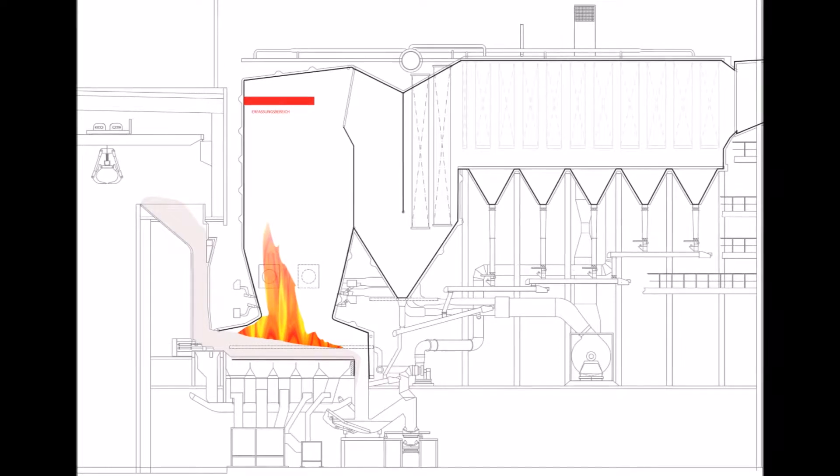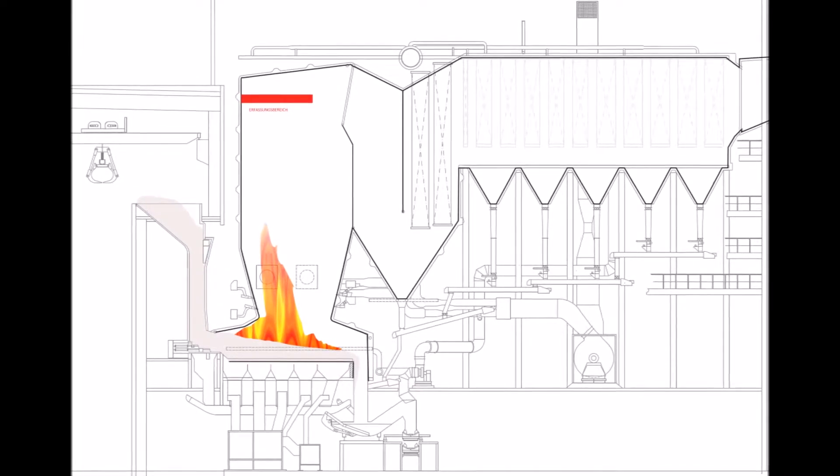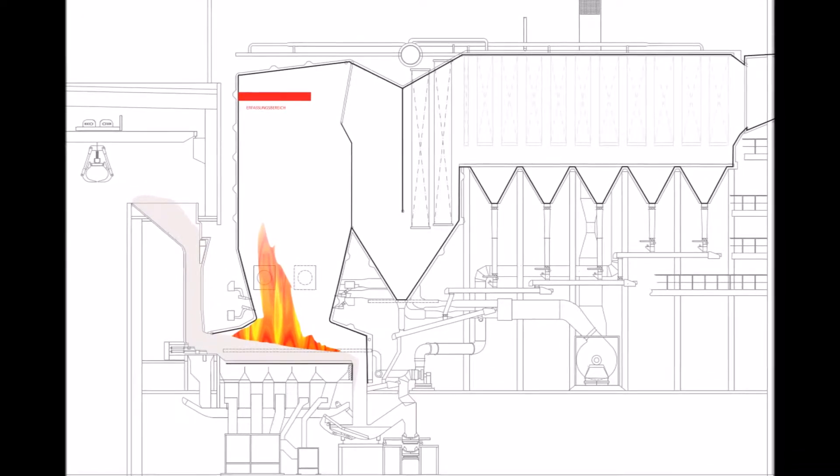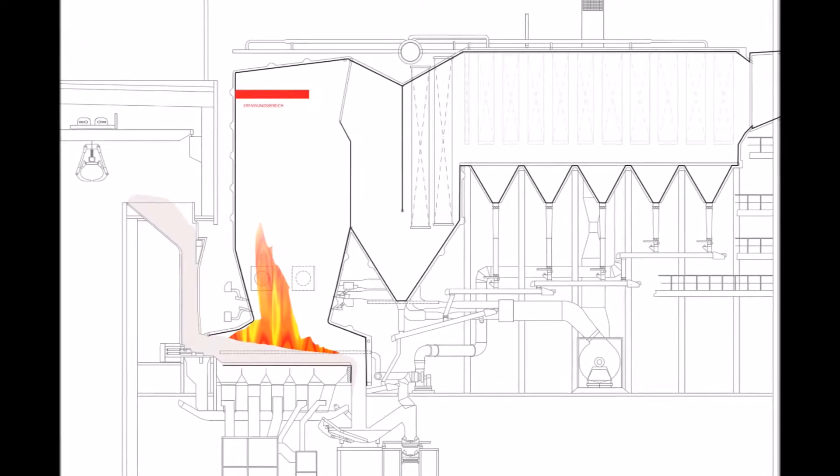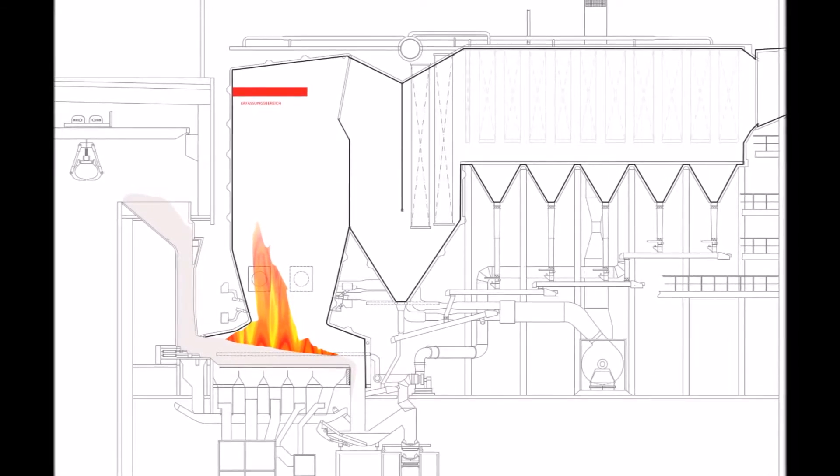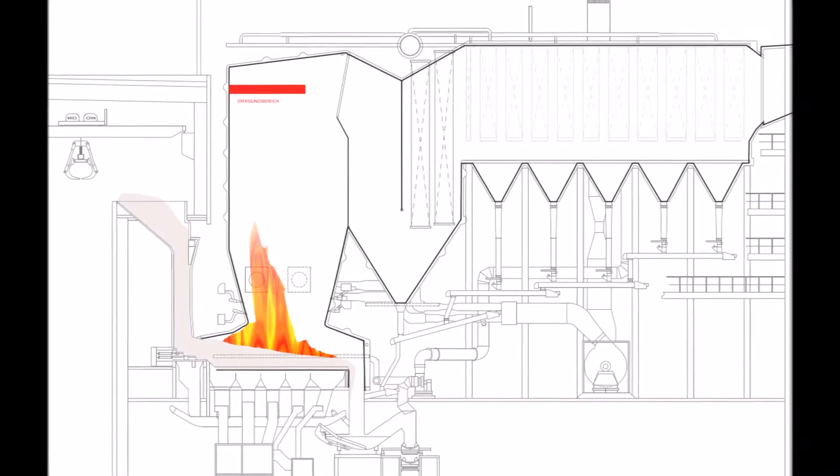By counting the tubes which are affected by those horizontal stripes, it's possible to estimate the impact area of the cleaning nozzle, which is in this case three to four meters.